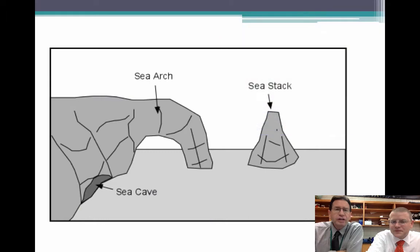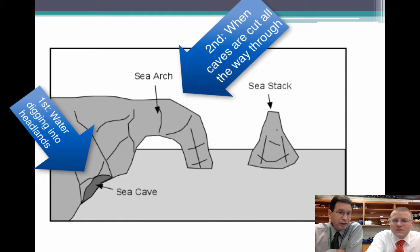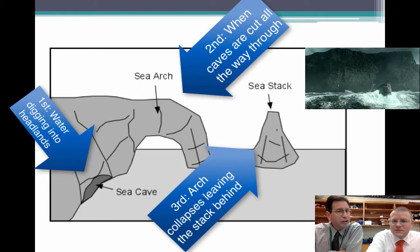What you see in this picture is a sea cave, a sea arch, and a sea stack — basically in that order. It starts to wear out a little bit, making a sea cave — very dangerous, by the way. Sea arches form when the cave cuts all the way through the rock. And when that arch collapses, you get a sea stack.